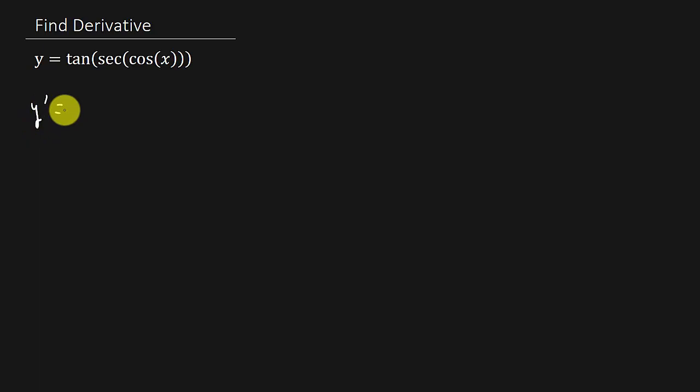So we have y prime is equal to, so we've got the tangent of all of this. So the derivative of tangent is secant squared secant cosine x. Alright, so that's the derivative of this tangent.